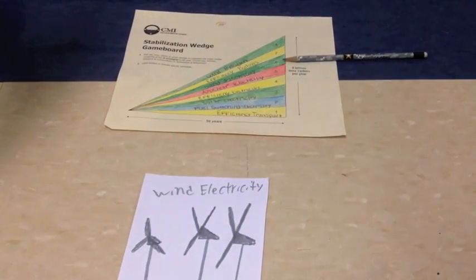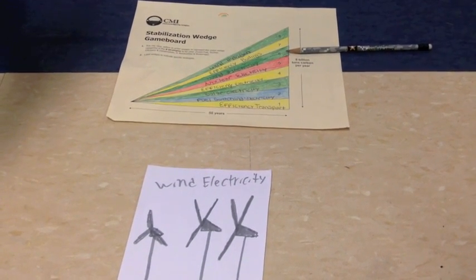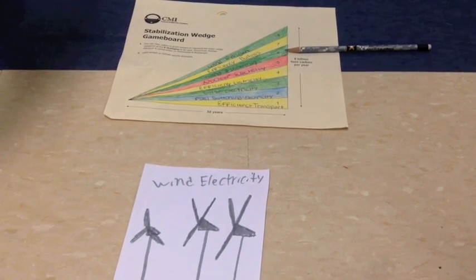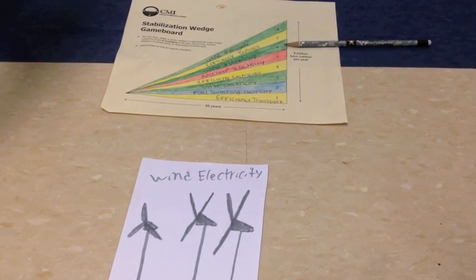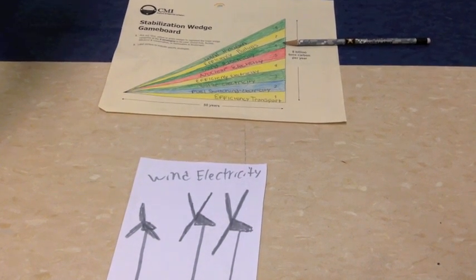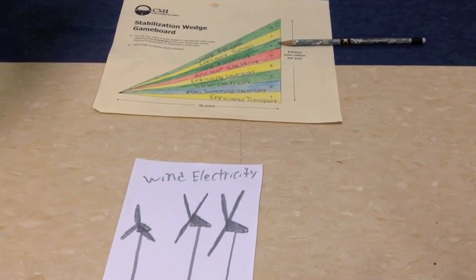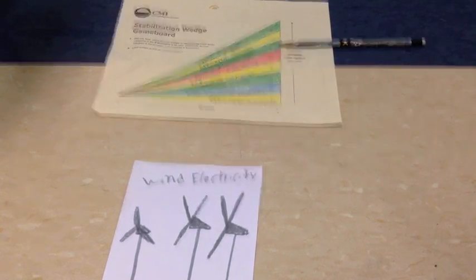Wind electricity is a mildly costed way to receive energy. Windmills are put in place and move when the wind hits them, causing them to move and create electricity. We picked wind electricity because it will displace coal based electricity and have its own land for wind farms.